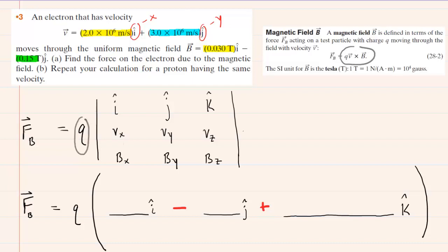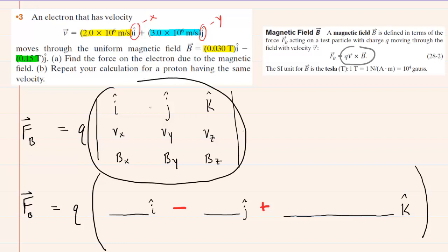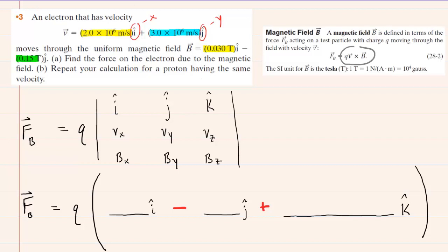We have the charge q multiplied by what will become a cross product. A cross product is often written in this determinant notation — do not be intimidated by that. We have i hat, j hat, and k hat representing the x, y, and z directions. Since we're doing a cross product between velocity and magnetic field, we fill in the various components: the x, y, and z components for velocity and the corresponding components for the magnetic field.